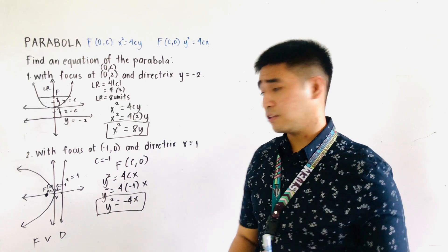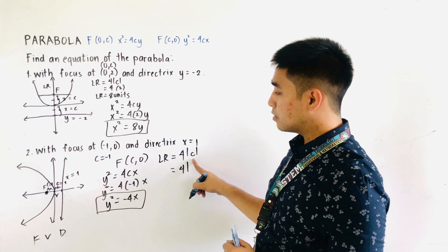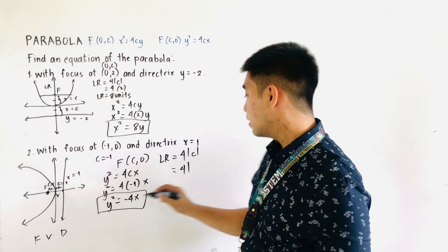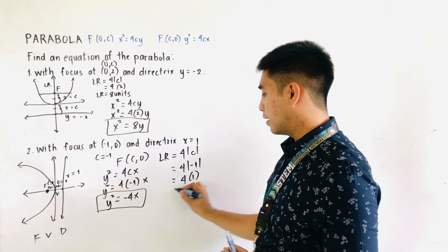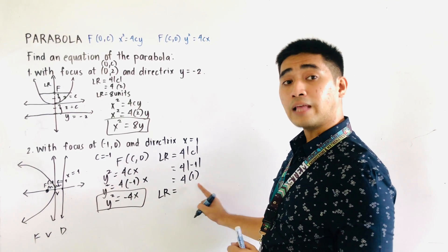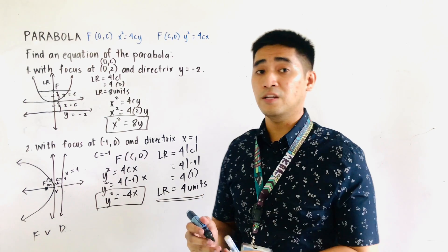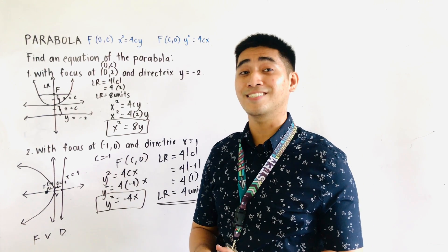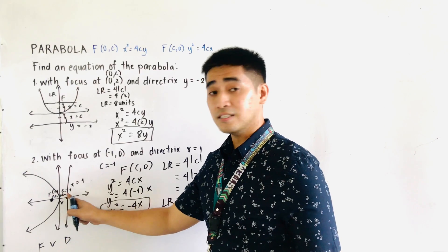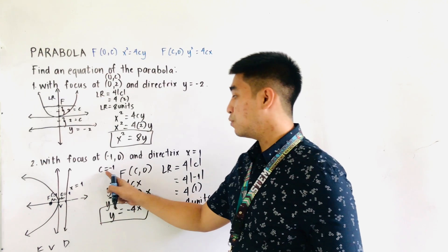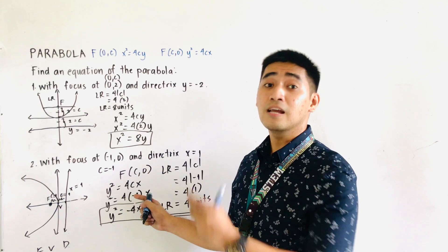If we are asked to get the latus rectum, the length is equal to 4 times the absolute value of c. That is 4 times |negative 1|, which equals 4 times 1 = 4 units. Always remember that the length of the latus rectum is positive because it is a distance. When substituting into the formula, do not forget to include the negative sign since the parabola opens to the left.